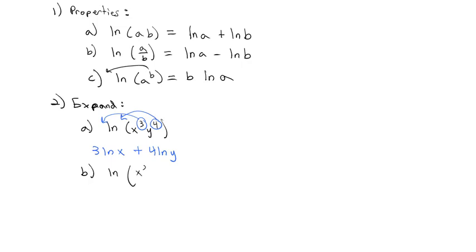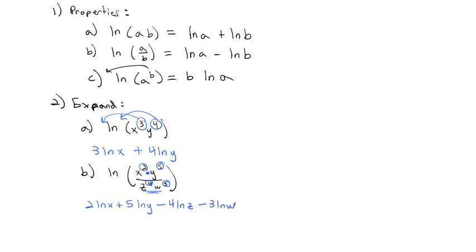We can extend this to ln(x²y⁵ / z⁴w³). As we expand, the products on top give positive logs and the terms on the bottom give negative logs, because negative logs mean negative exponents which move things to the bottom of the fraction. Each exponent also moves out front. The result in one swoop: 2·ln(x) + 5·ln(y) − 4·ln(z) − 3·ln(w). Expanding logs this way gives many smaller logs that are easier to work with in calculus applications.